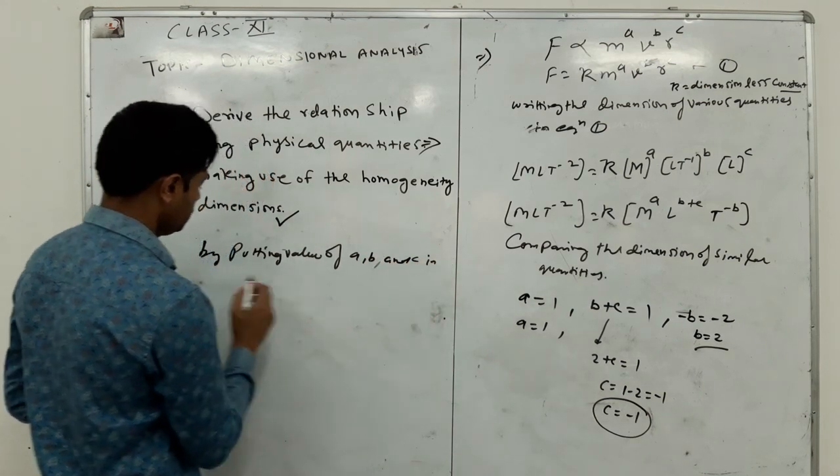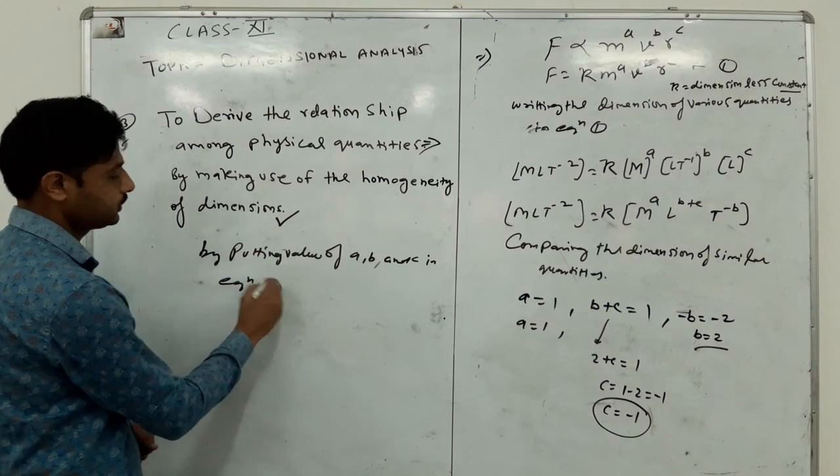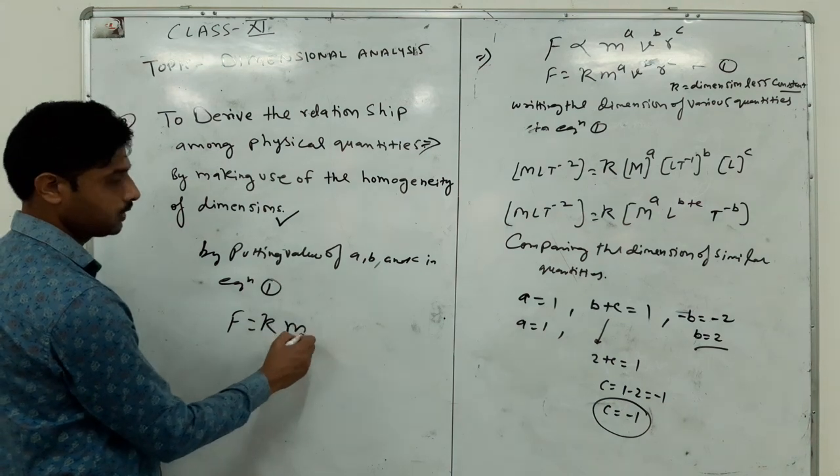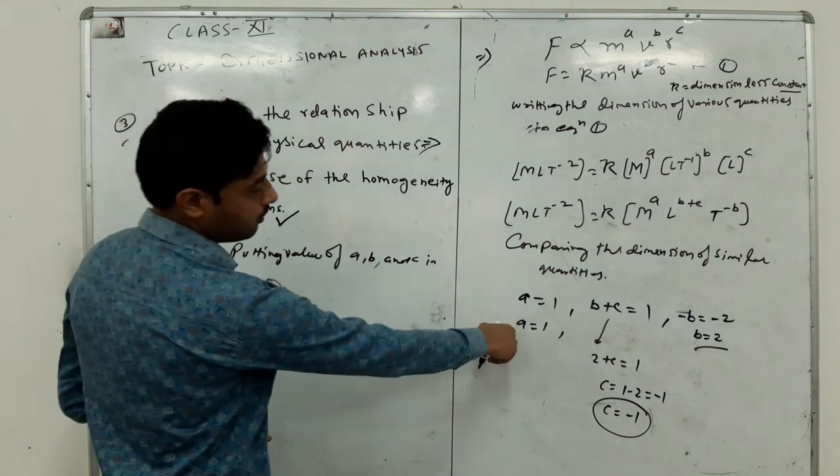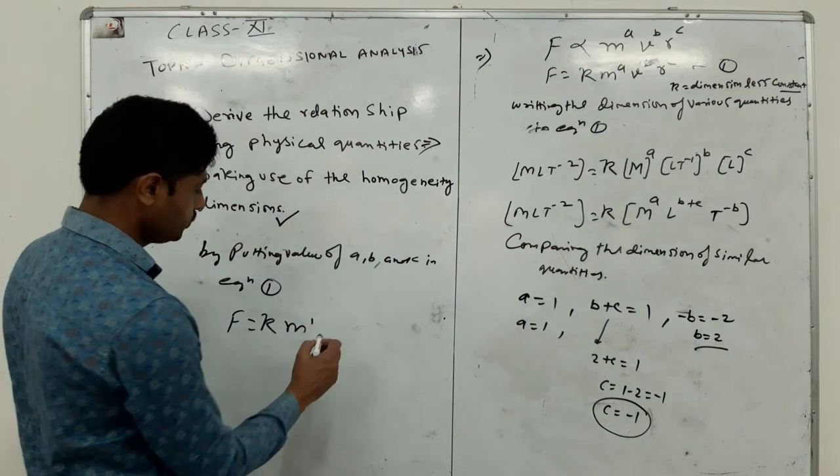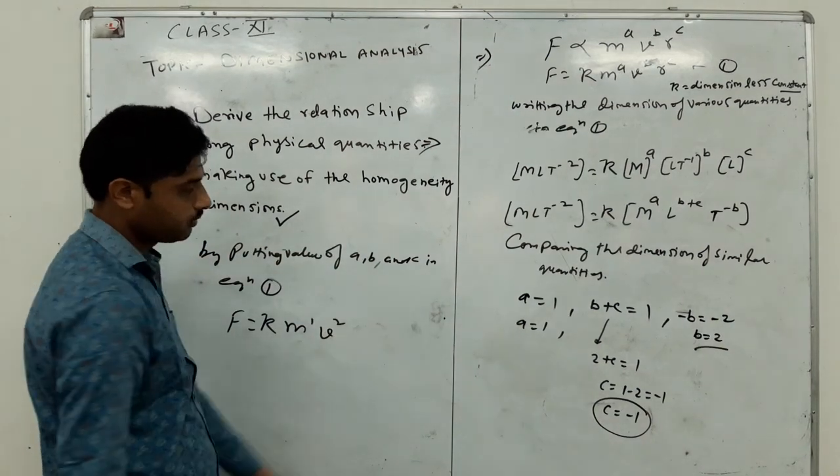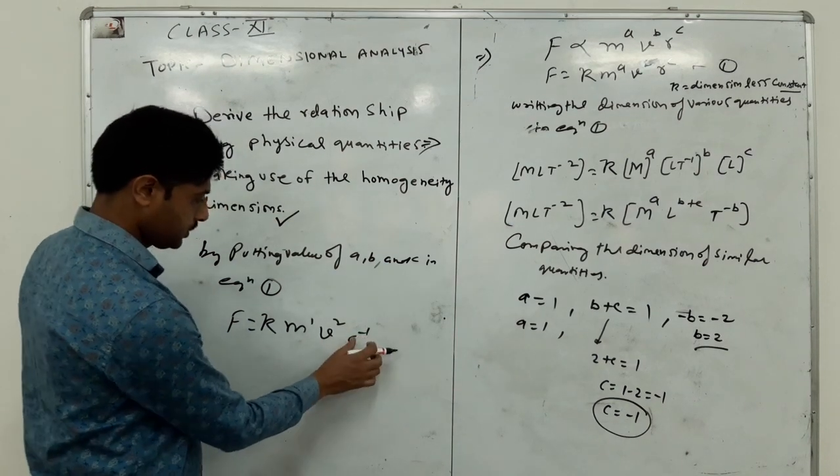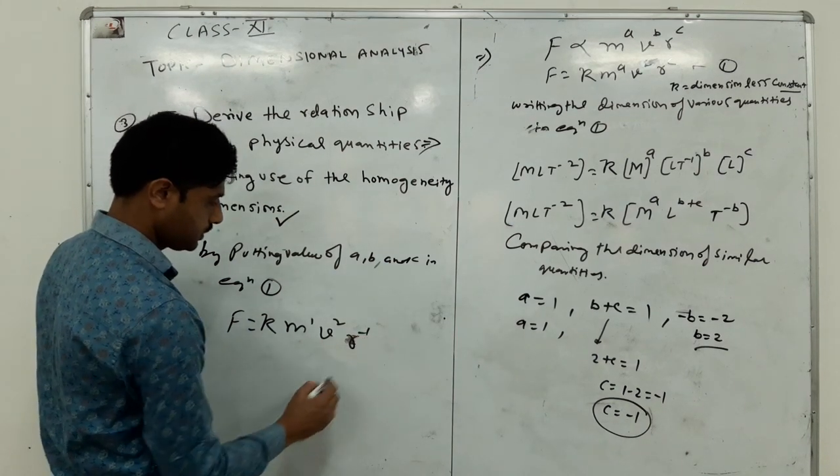So putting the values of A, B, and C in equation first: F equals K times M to the power 1, times V to the power 2, times R to the power -1.